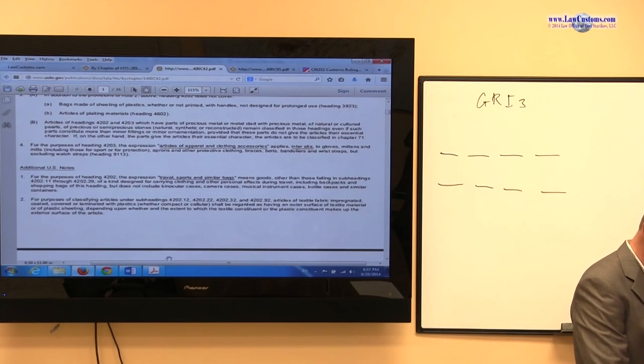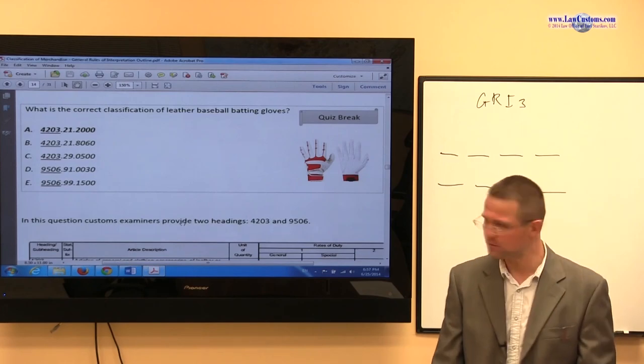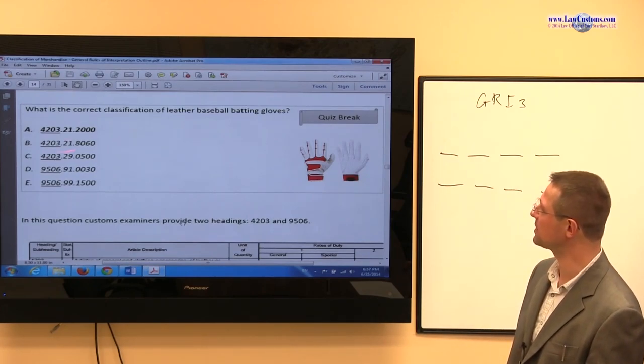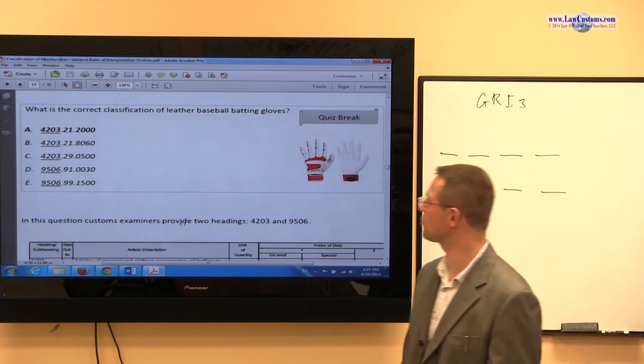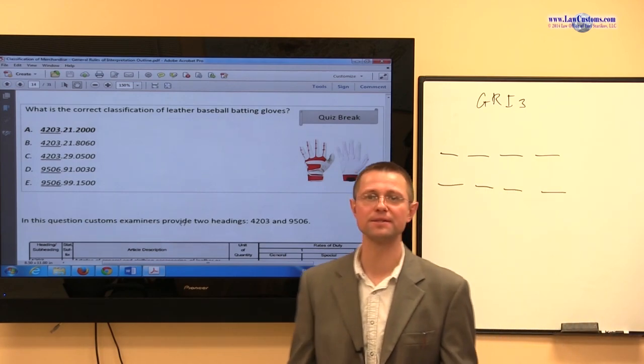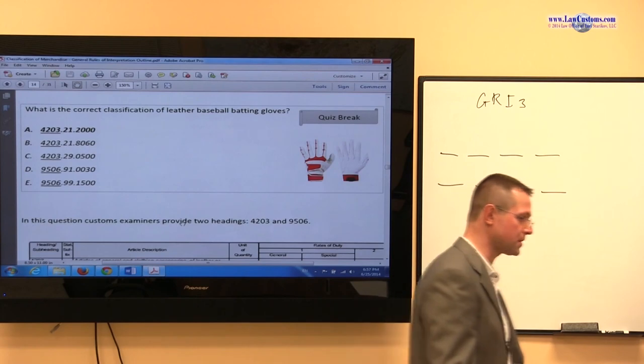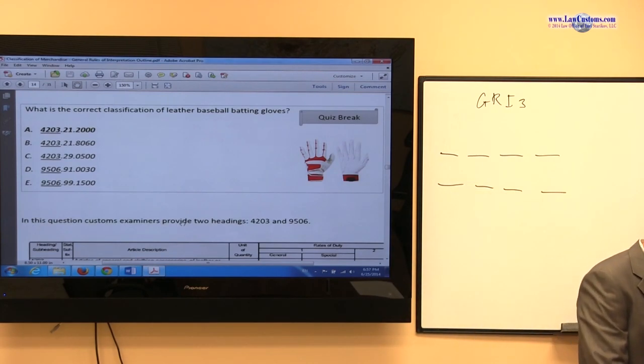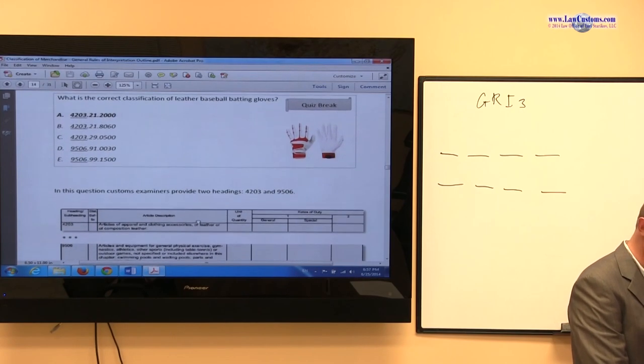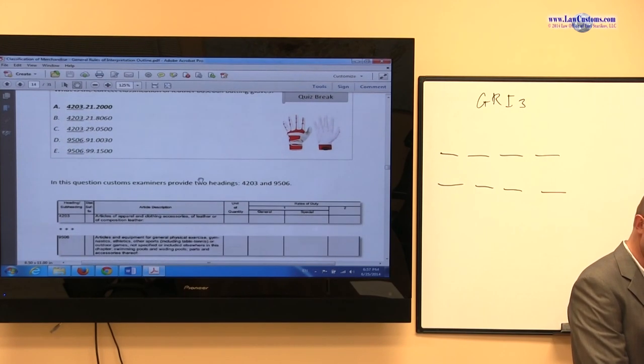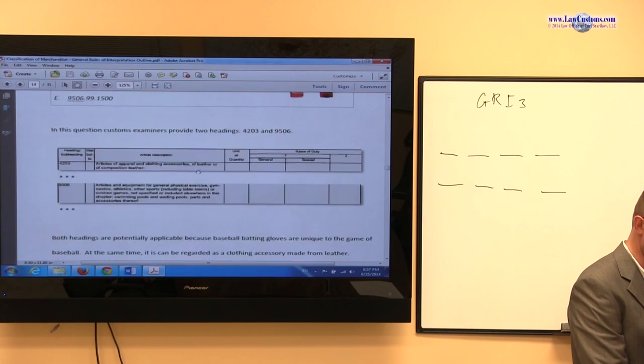So going back to the example, you can kind of see that the correct answer was there. So 4203 is the dominant heading. But nonetheless, I think it was a good example of tension that you always have to check - GRI1 versus GRI3.